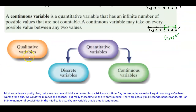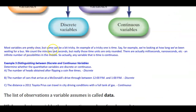Qualitative variables are their own category, while quantitative variables have two subcategories: discrete and continuous. Most variables are pretty clear, but some can be tricky. An example of a tricky one is time — say we're measuring how long we've been waiting for a bus. We count the minutes and seconds, but those time units are only rounded. There are actually milliseconds, nanoseconds, and so on — an infinite number of possibilities in between. So any variable that is time would be considered continuous.